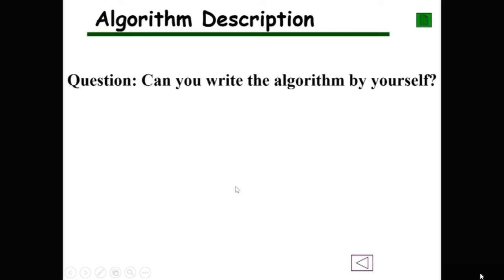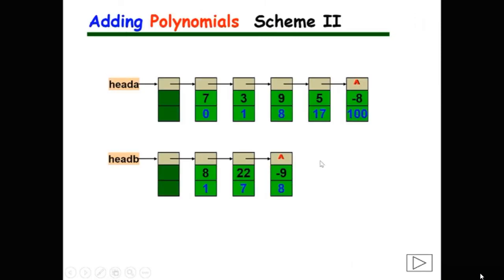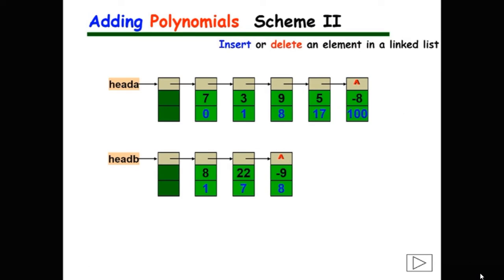This algorithm is not very difficult and you can write it yourself. To add two polynomials, let's see another method. The second method is to modify list LA — insert or delete some nodes in list A so that finally, list A stores the sum of two polynomials. This is an application of insertion and deletion operations on a singly linked list.